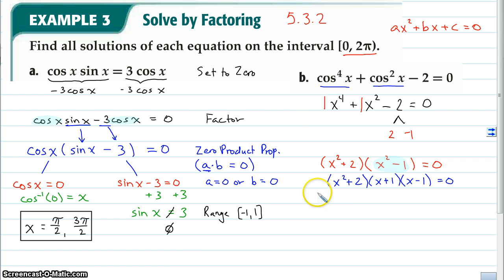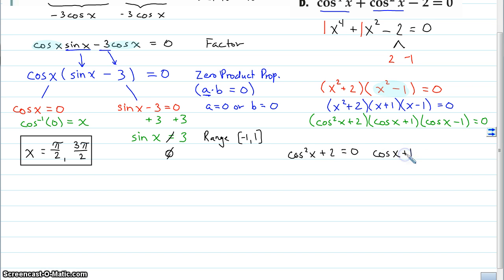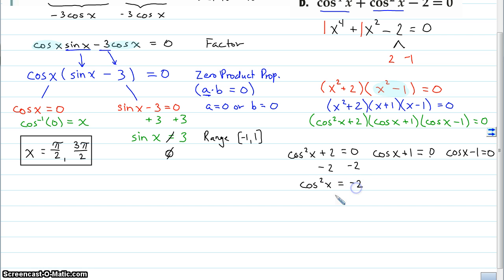Using the zero product property with three factors, we get three equations: cos²x + 2 = 0, cos x + 1 = 0, and cos x − 1 = 0. For the first, subtracting 2 gives cos²x = −2. Anytime you square anything, it's never negative — taking the square root gives an imaginary solution. We're looking for real solutions only, so this first factor has no solution.